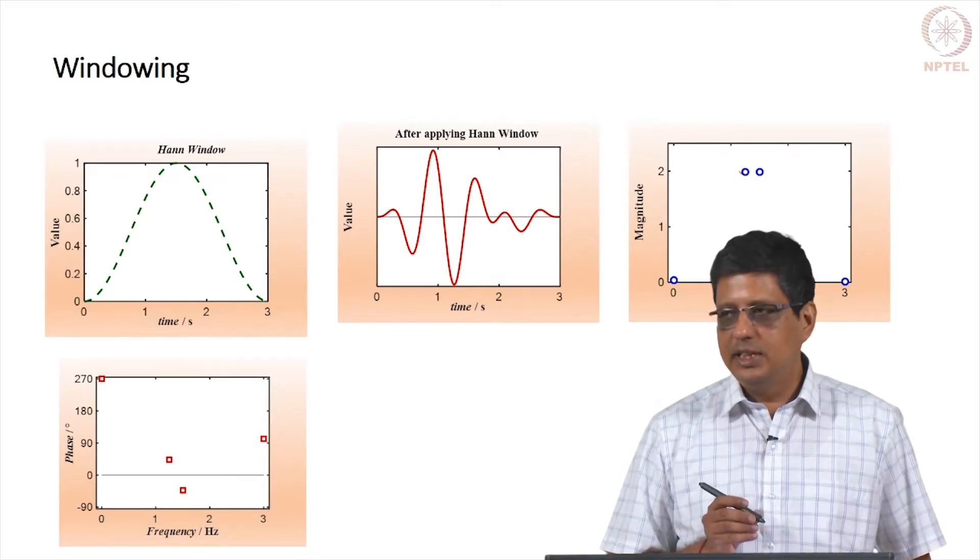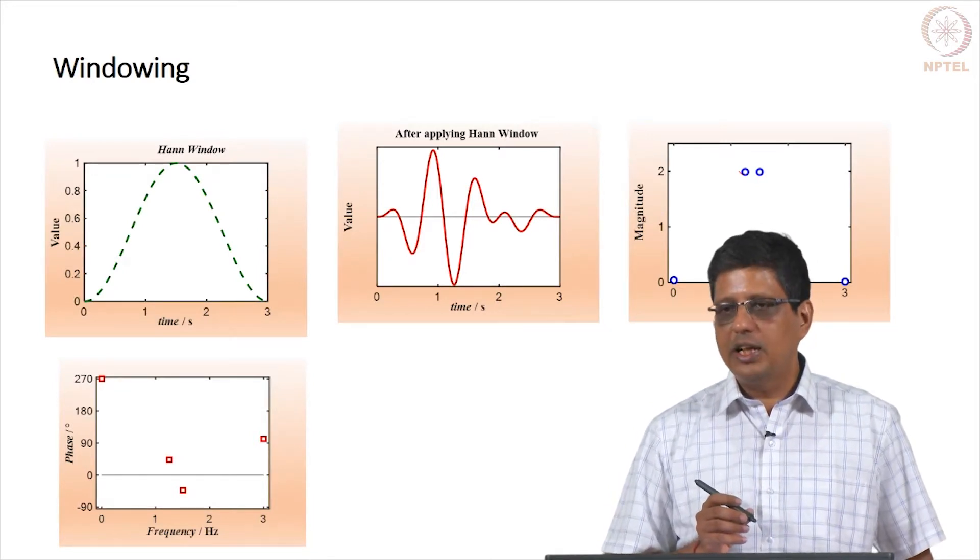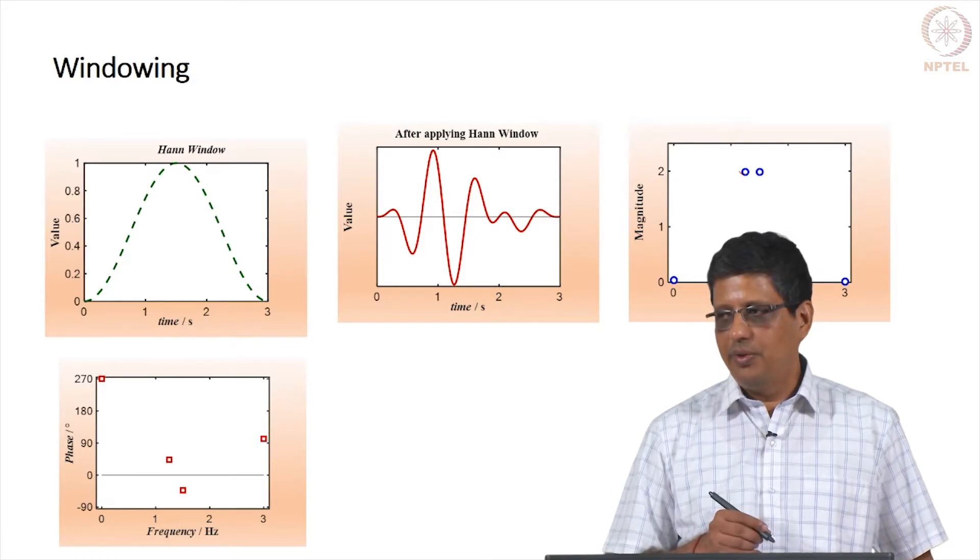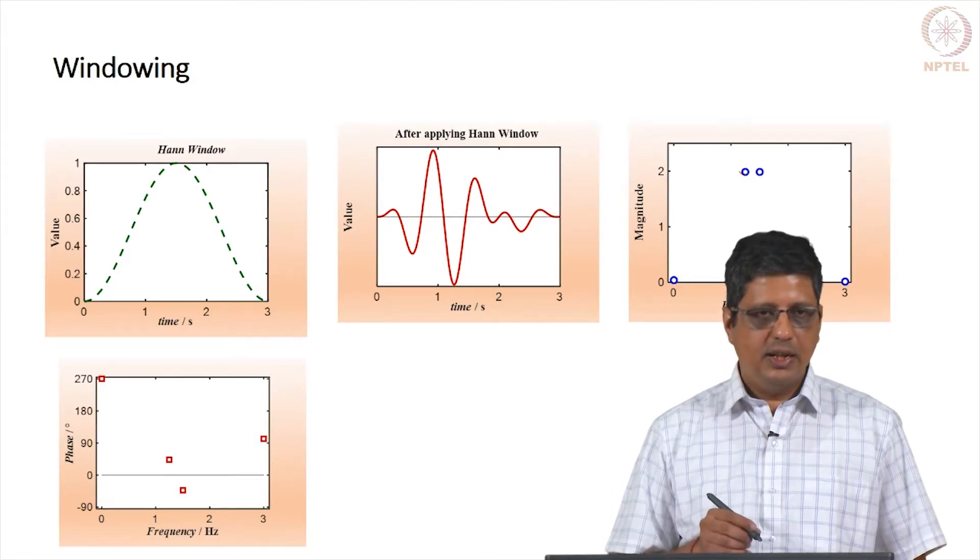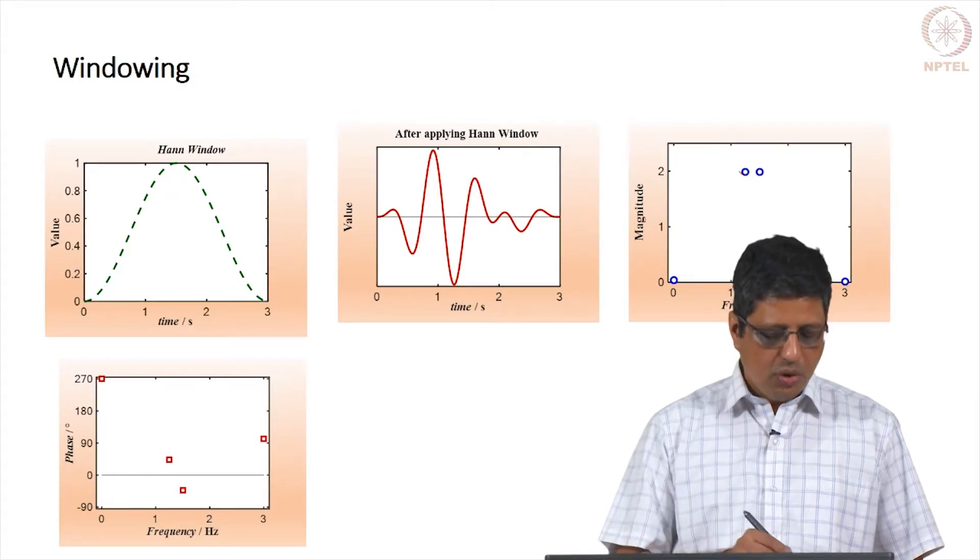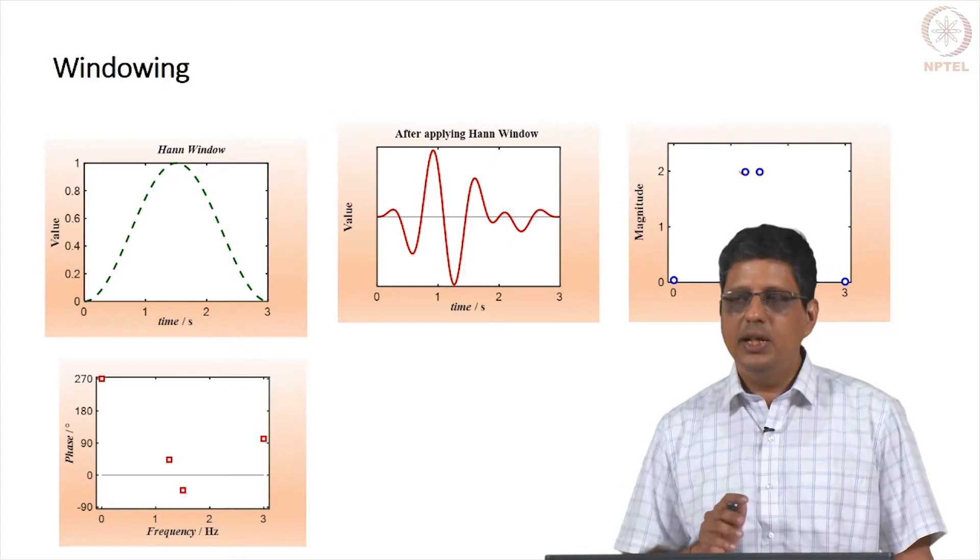Usually windowing is used in digital signal processing. And there, most of the time, people do not worry about the phase. They just look at the magnitude, whereas in the impedance spectra here, we want to know both the phase and the magnitude. So we have to know this. So the point is this.